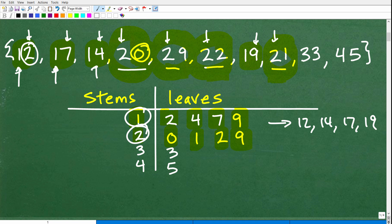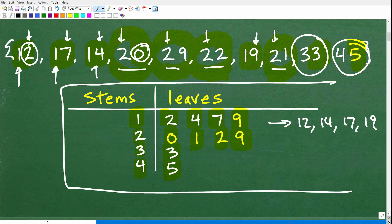And then we can continue to look for any other information here in our data set, and we can see we have one number in the 30s. So this is going to be 33. So we'll put our stem as three and then our one leaf will be three, so that represents the number 33. And then lastly we have 45, so we'll have a stem of four and our leaf of five. And there you go. So this here is the stem and leaf plot for this data.